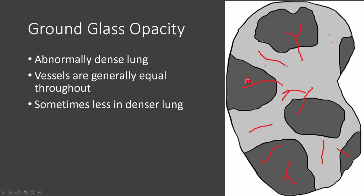Ground glass opacity, on the other hand, means that the abnormal lung is the denser or whiter lung. In this case, the vessels are generally equal throughout the lung parenchyma — typically because ground glass opacity represents an acute abnormality and the body hasn't had time to shunt blood away from the abnormally dense areas. We would describe this as a widespread mosaic attenuation abnormality favored to be ground glass opacity, as the vessels appear equal in size throughout.